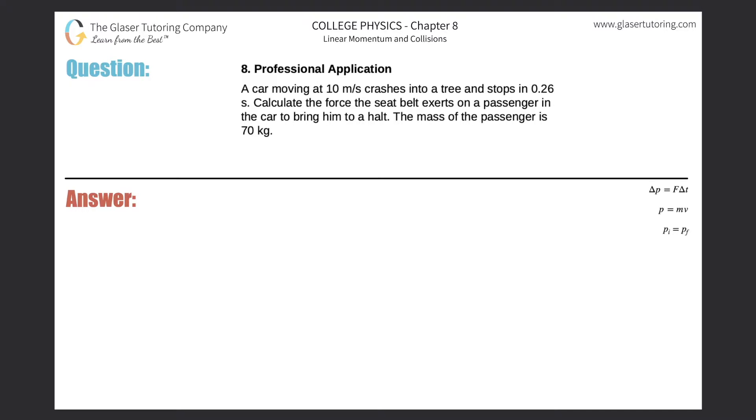Number eight, a professional application. A car moving at 10 meters per second crashes into a tree and stops in 0.26 seconds. Calculate the force the seat belt exerts on a passenger in the car to bring them to a halt. The mass of the passenger is 70 kilograms.